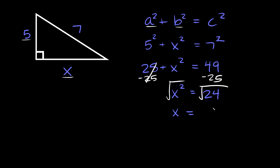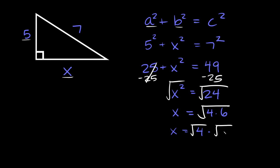You want to break this up using a perfect square if possible. So in this case we can break it down as the square root of 4 times 6, because 4 is a perfect square. We can split those into their own radicals: the square root of 4 times the square root of 6. So x is equal to 2 times the square root of 6.